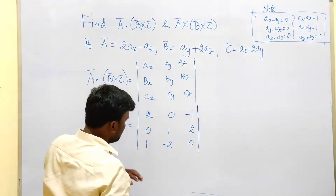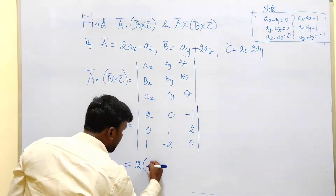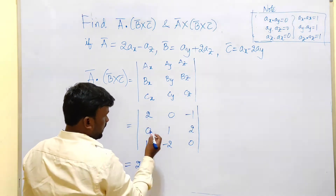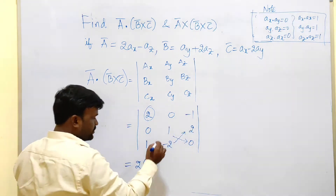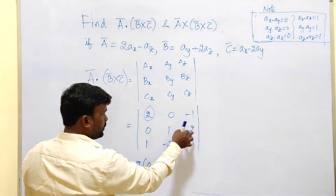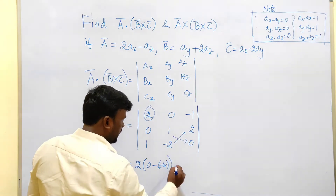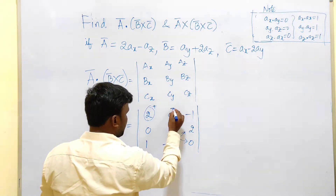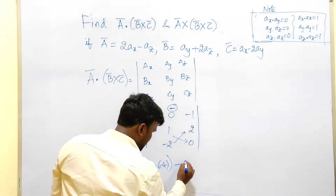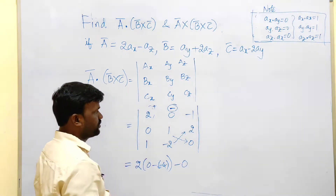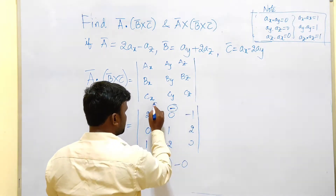Now simplify by expanding the determinant. The first term is 2 times (1·0 − 2·(−2)) = 2 times (0 + 4) = 8. The second term uses the minus notation: the middle element is 0, so that entire term is zero — no need to calculate it.